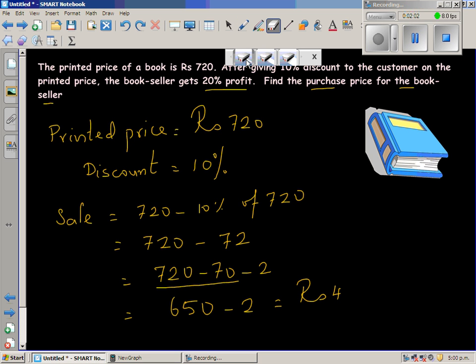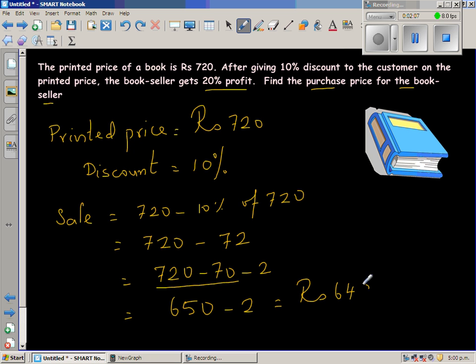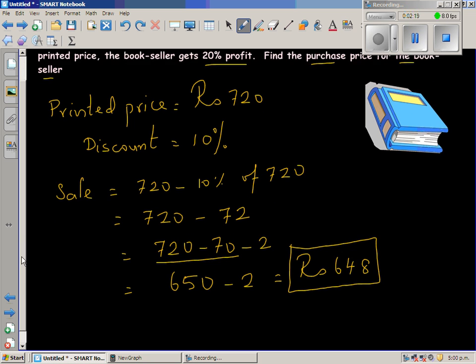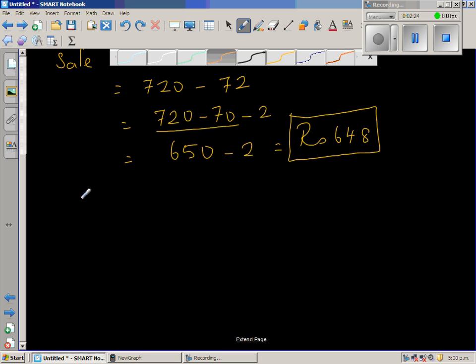So the sale price is 648 rupees. Now even when the bookseller is selling at this price, he's having a profit of 20%. So the question is, you want to find the purchase price. We're going to do a little algebra here.